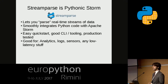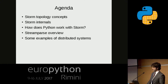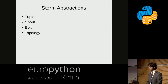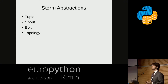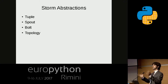It's good for anything that requires sub-second latency — analytics, logs, sensors. Storm uses a few abstractions to describe the computational graph. You've got a tuple, which is just an individual record of data passing through the Storm topology. You've got a spout, which is the source of data. You've got a bolt, which is a component that processes input and sends it along the topology — the input can be a spout or another bolt. And you've got the topology itself, which is the overall collection of components that create the computational graph.